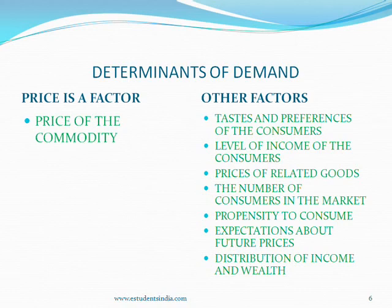Second, income of the people: the demand for goods depends upon incomes of people. The greater their income, the greater will be their demand for goods. Greater income means greater purchasing power, so when incomes increase, people can afford to buy more. When the incomes of the people fall, they will demand less. For example, there is a drought and agricultural production falls, incomes of the farmers decline, and they demand less goods that year.